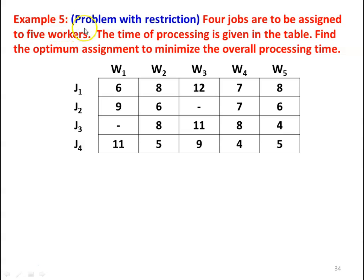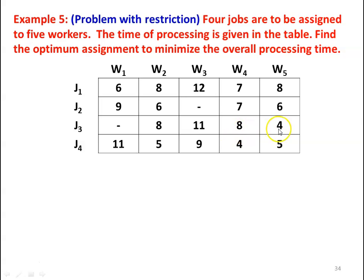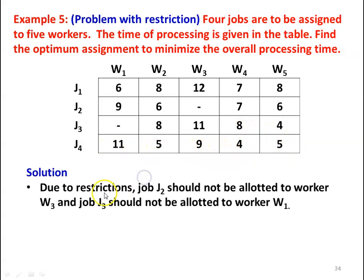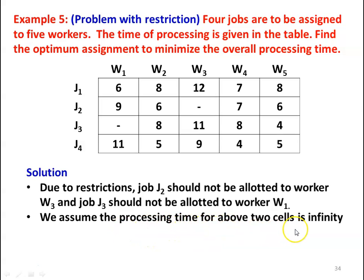We take example number 5 — a problem with restriction, meaning certain jobs cannot be assigned to certain machines. Four jobs are to be assigned to five workers; the processing time is given in the table. Find the optimum assignment to minimize overall processing time. Job J2 cannot be allotted to worker W3, and job J3 cannot be allotted to worker W1. The processing times for these two restricted cells are assumed to be infinity.